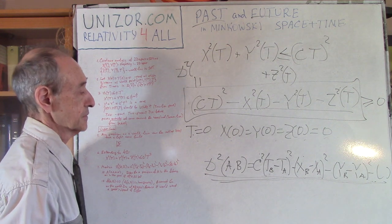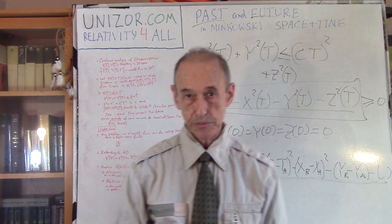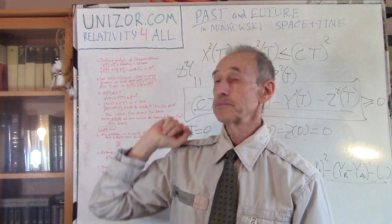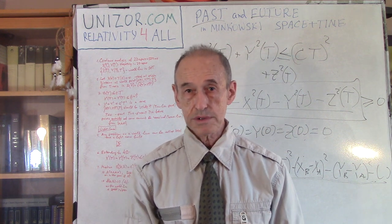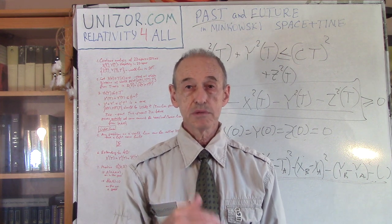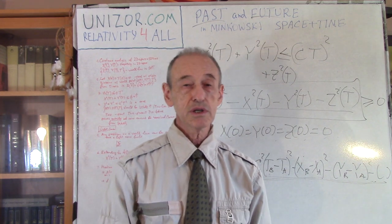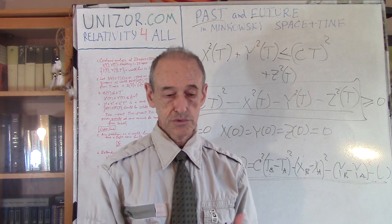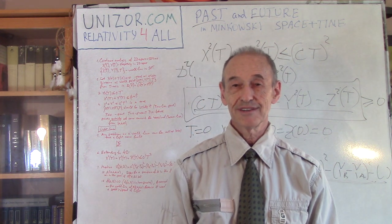That's basically it. I recommend reading the accompanying notes on unizor.com. Go to unizor.com, choose the Relativity for All course, then the Minkowski View topic, and within that you will find this lecture on past and future. It presents the same material in textual form with pictures. Thank you very much and good luck.